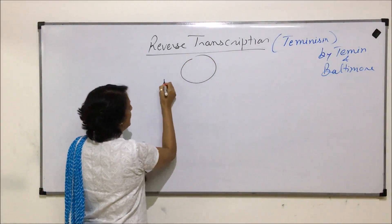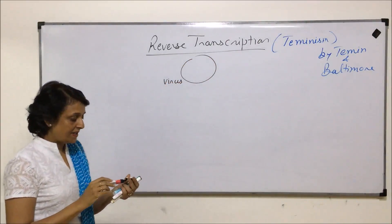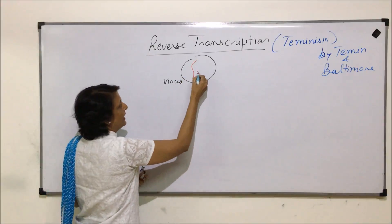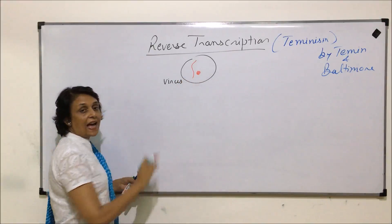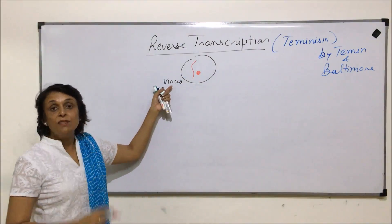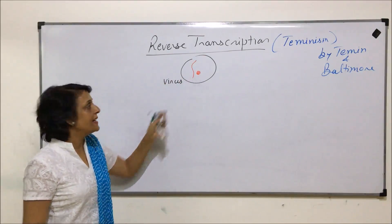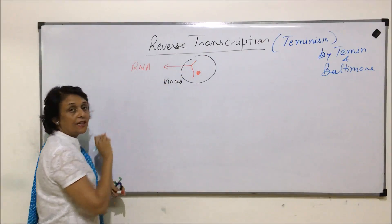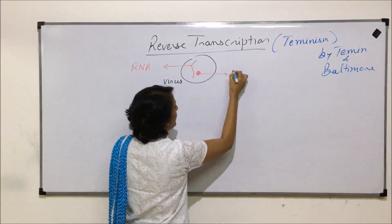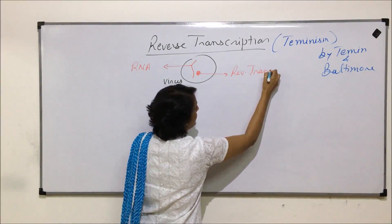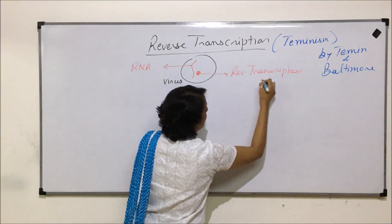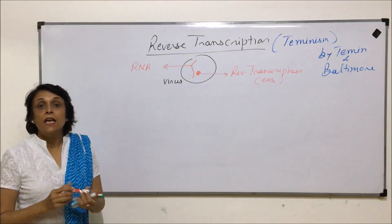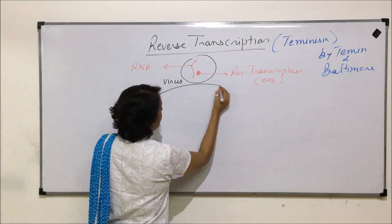Let us say this is the virus, and this virus has RNA as the genetic material — this is the RNA strand. Whichever organism has RNA as genetic material, which are invariably viruses, they always have the reverse transcriptase enzyme. The strand we have drawn is the RNA that is the genetic material, and the circular structure we are drawing is our reverse transcriptase enzyme.